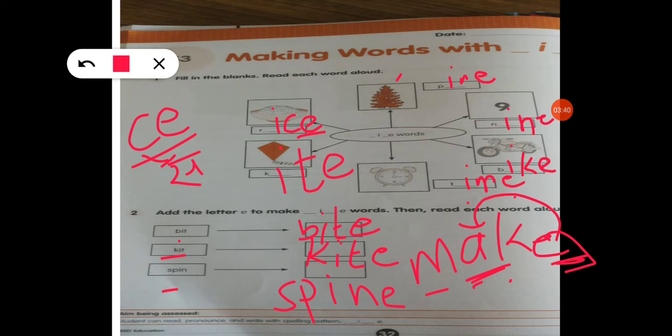Bit became bite. Kit became kite. Kit is a small purse where we keep money, and kite you already know. Spin means to rotate, a top spins, and spine is the backbone. So meaning and spelling both change when we add E letter in the end of any word.